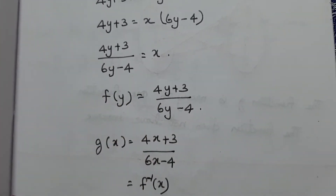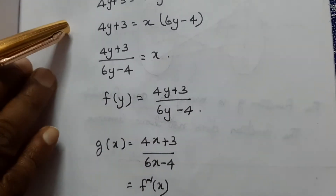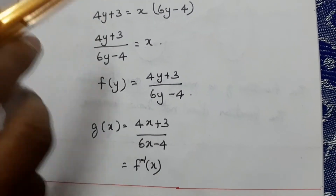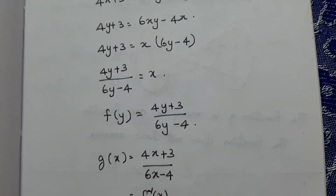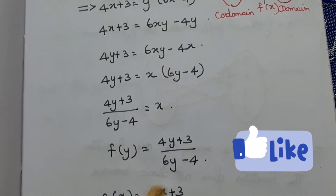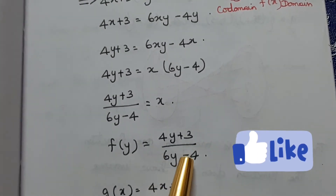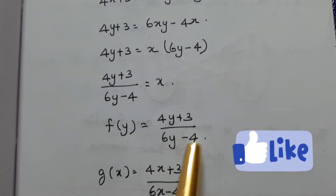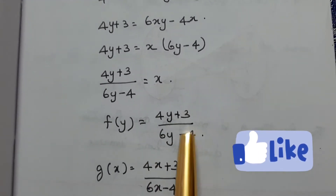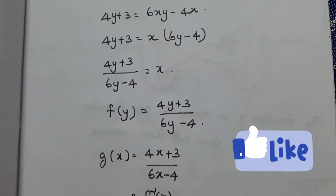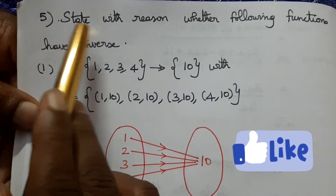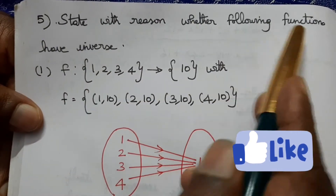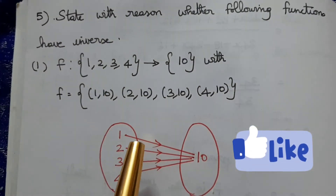So the inverse is this function. The question is: given the function in terms of y, x equals the same form. Therefore the inverse of f is f inverse of x equals 4x plus 3 divided by 6x minus 4, which is the same as f itself — the function is self-inverse.